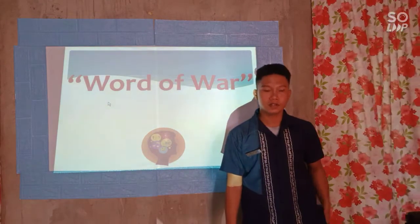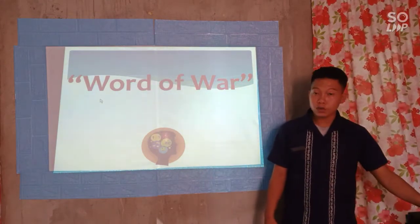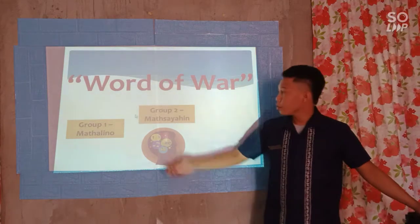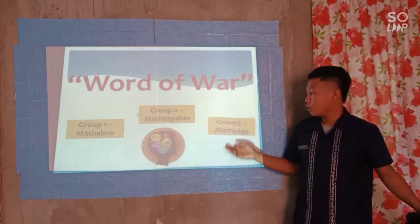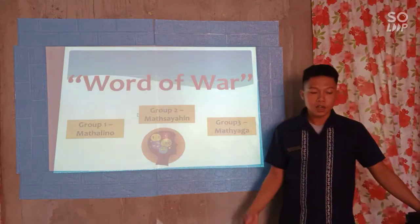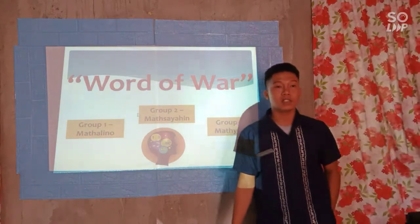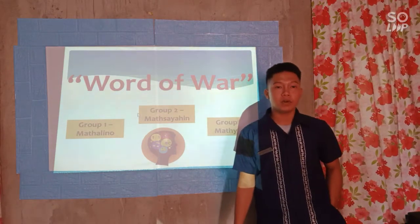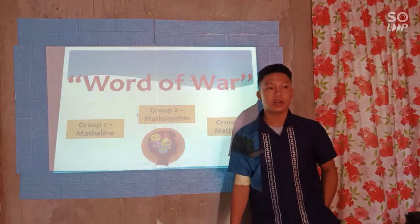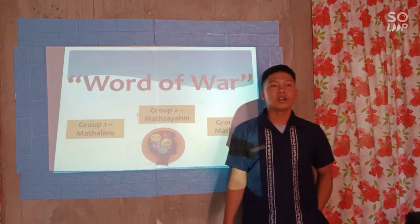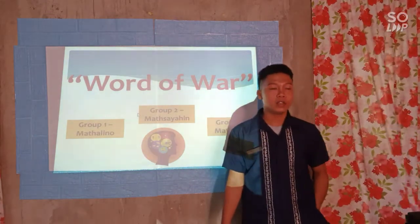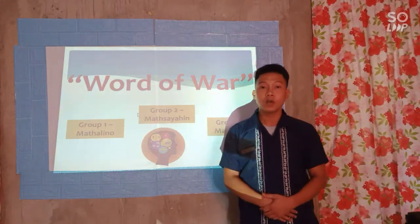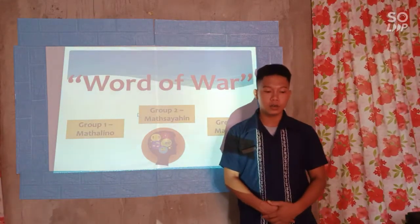Are you done grouping yourselves? Group one will be the group Matalino, group two will be the group Masayahin, and group three will be the group Matyaga. I will show you a jumble word and you guess the correct word. The group who gets the correct answer with the fastest time will be given a point, and the group with the highest score will be the winner.